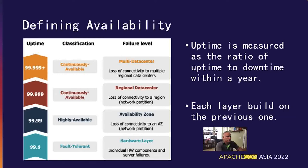Systems that can survive an availability zone outage are then considered highly available. This is handled by spreading your resources across multiple AZs and having redundant copies there, so that if one zone goes down within a region, you're still able to function by using resources placed in another availability zone within the same region. The ability to survive one or more regional outages reaches the level of what's considered continuously available — the five nines gold standard — ensuring your application can survive the complete loss of a regional data center through a network partition or other catastrophic event.